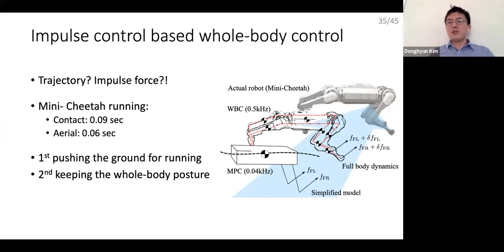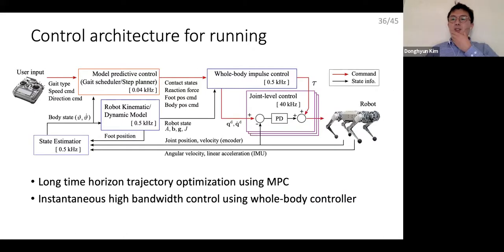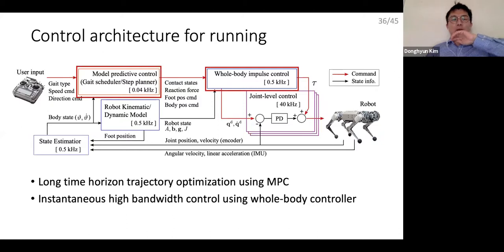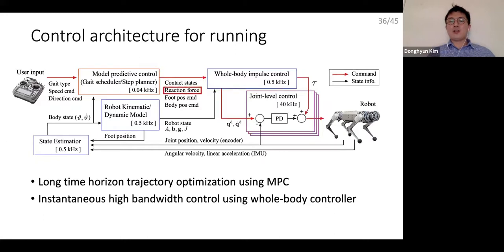So I decided to focus on pushing the ground rather than following a desired trajectory — keep the whole body posture stable as long as I push the ground as MPC specifies. MPC calculates the reaction force profile, so I focus on the reaction force profile instead of the center-of-mass or body trajectory. I call this whole body impulse control — it's always nice to make a new name.